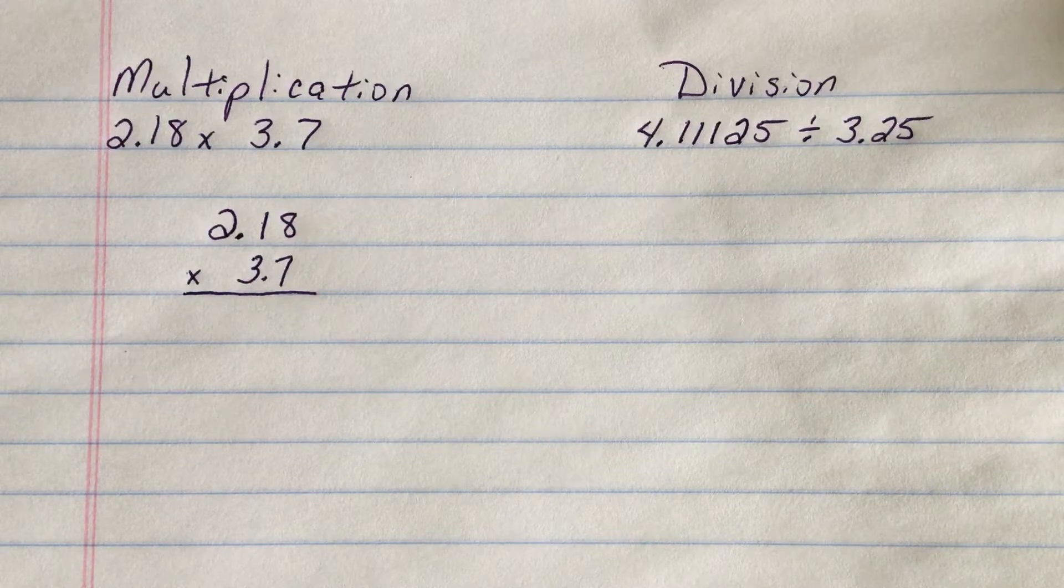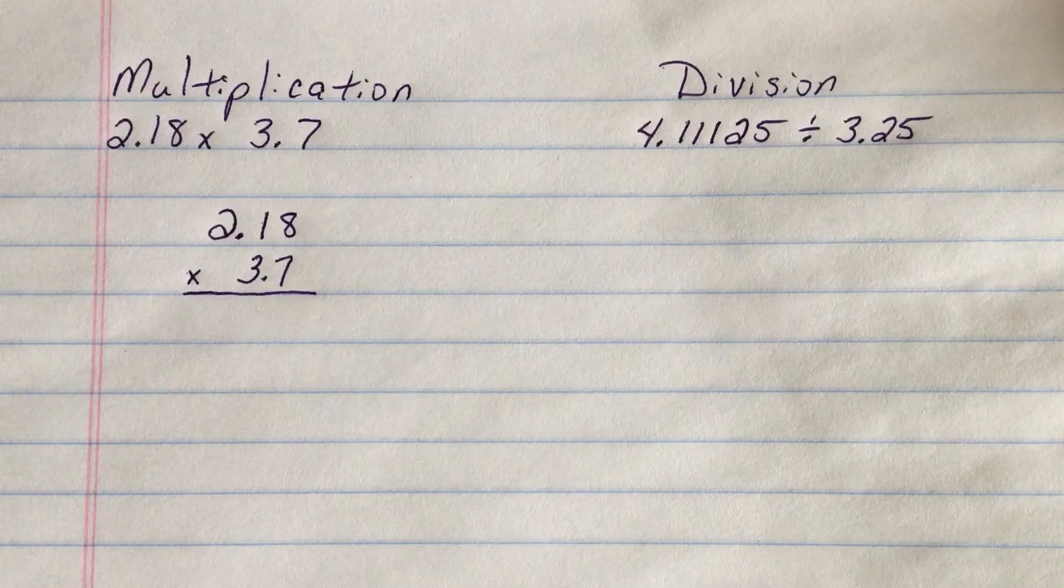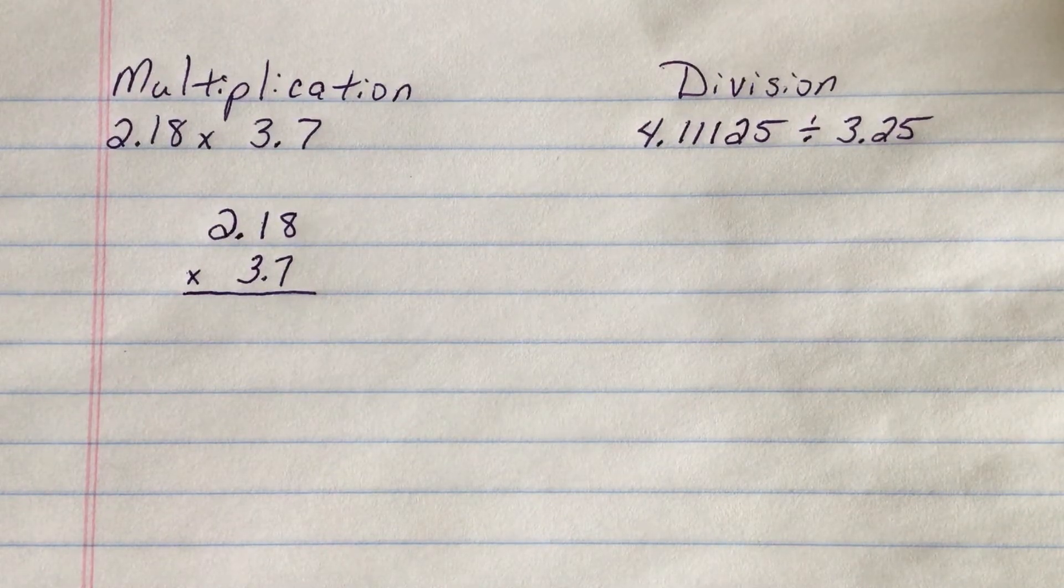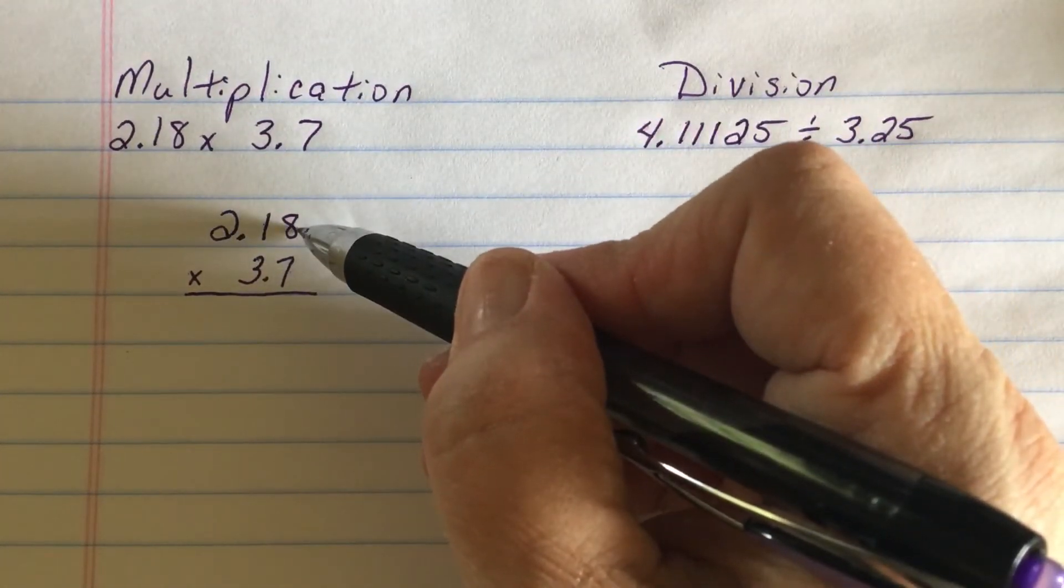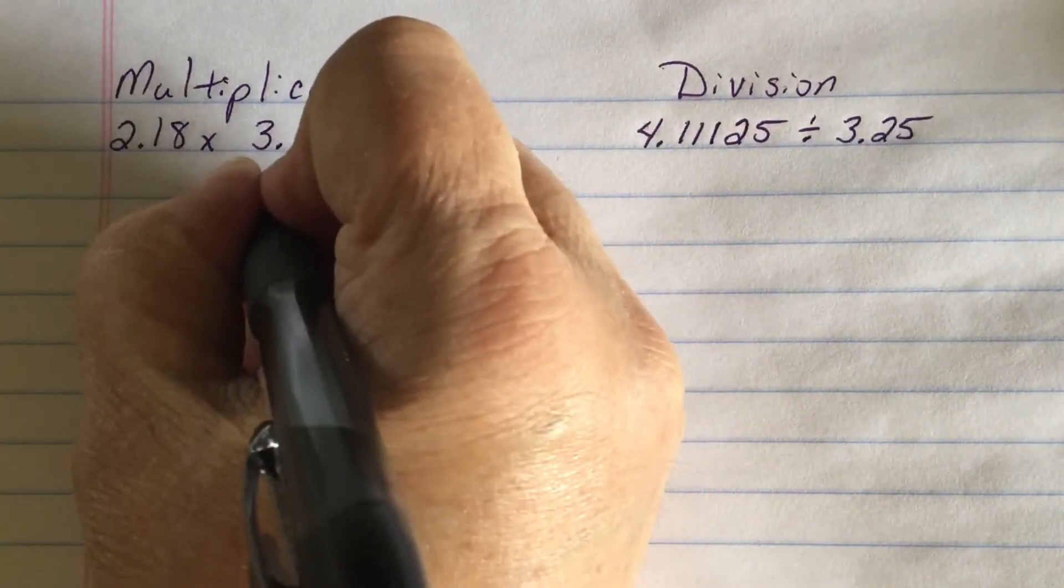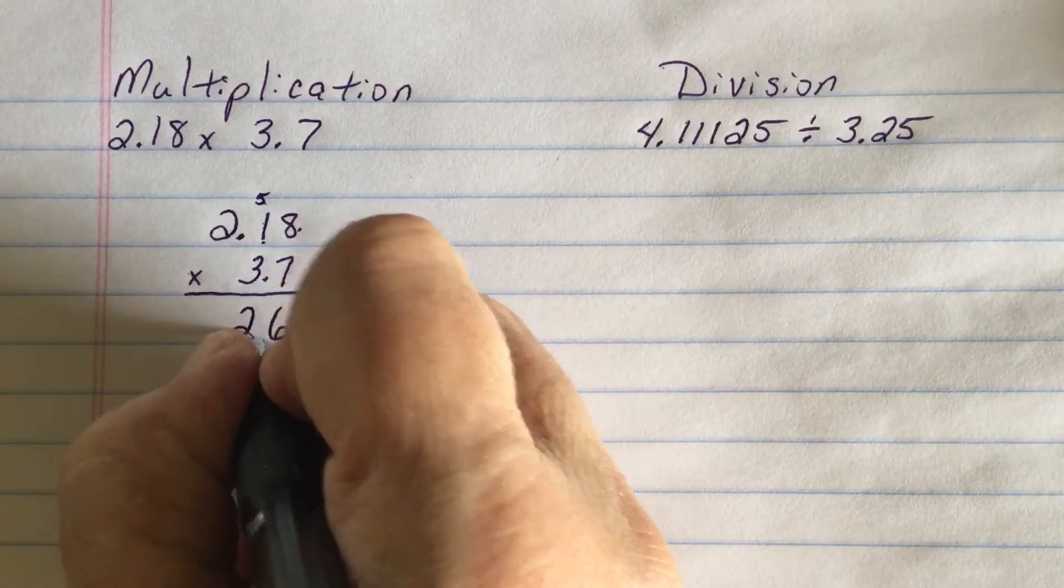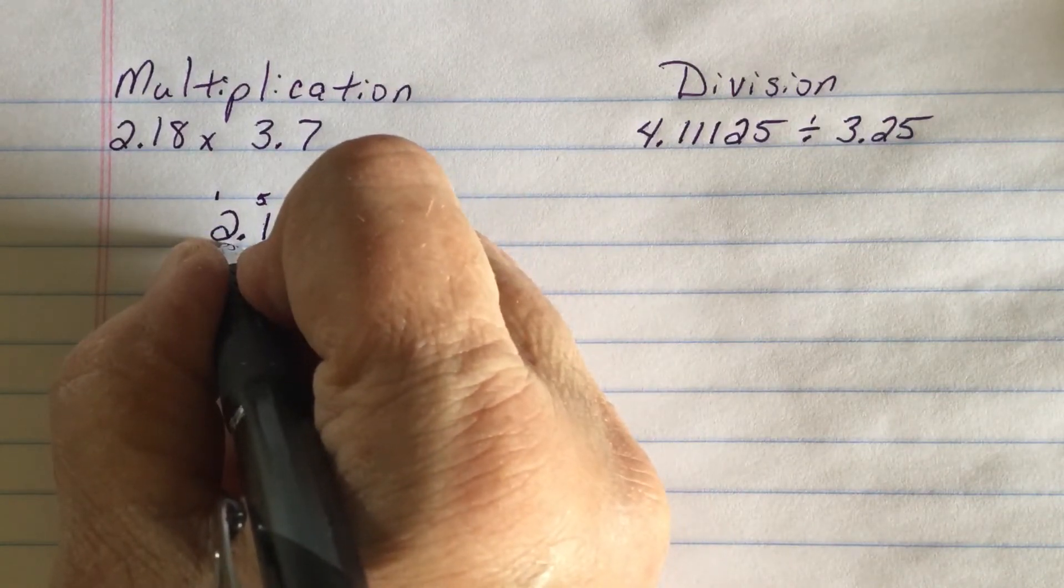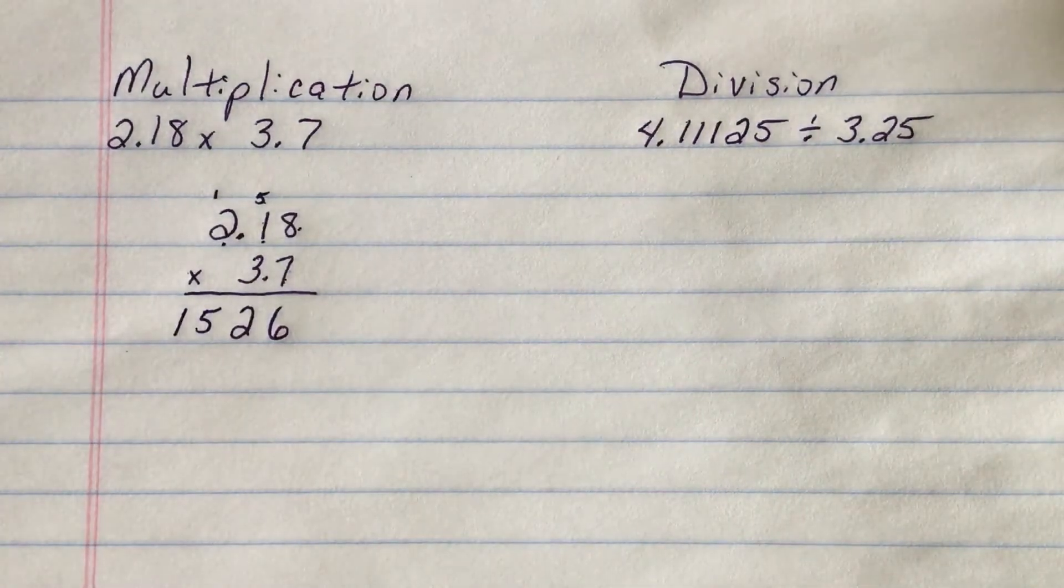So when I multiply through, I'm going to multiply through first by the seven and then by the three, and when I do the three I step over one. So let's see how that works. Seven times eight is 56. I write the six, carry the five. Seven times one is seven plus five is 12. I write the two, carry the one. Seven times two is 14 plus one is 15. Last number, nowhere else to carry, write 15.